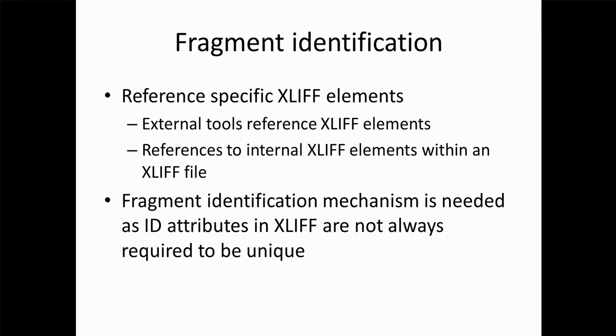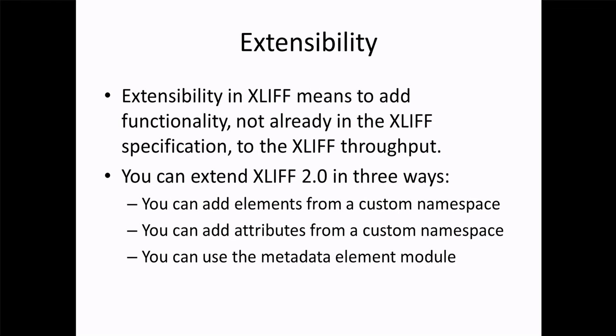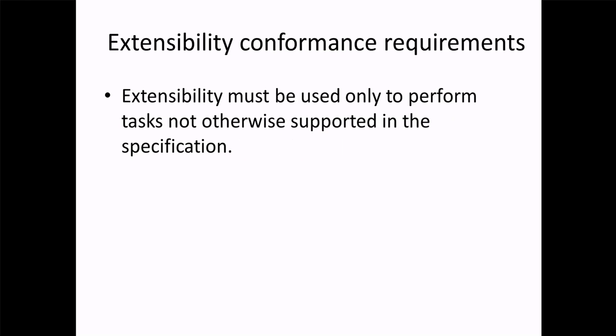Fragment identification: because XLIF IDs are not required to be unique, it can be ambiguous which ID you are referencing. External or internal tools can use the fragment identification method specified in the XLIF specification to resolve this. Extensibility in XLIF means adding functionality not already in the specification. In XLIF 2.0, you can add elements from a custom namespace, add attributes from a custom namespace, or use the metadata element module. Extensibility must be used only to perform tasks not otherwise supported in the specification.